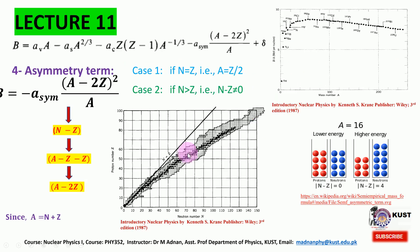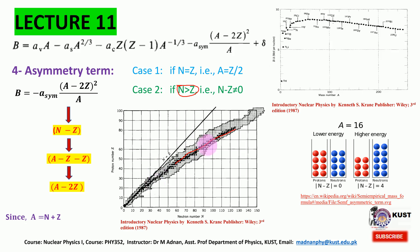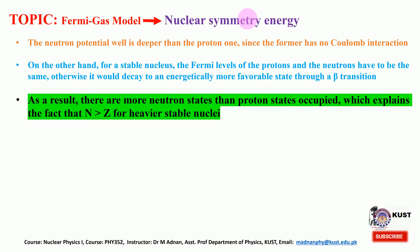We discussed on this plot in the previous lecture regarding beta-plus and beta-minus decay, in order for the nuclei to come to the stable region. The N equals Z configuration is always favorable for most nuclei. As a result, there are more neutron states than proton states occupied, which explains the fact that N greater than Z holds for heavier stable nuclei, while N equals Z is only possible for lighter cases.